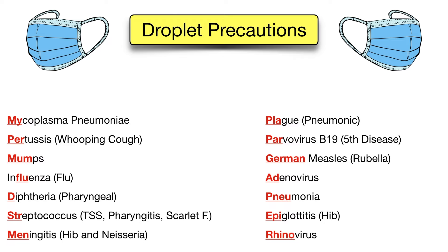Droplet precautions are also required for pertussis, also known as whooping cough, caused by Bordetella pertussis, as well as mumps, influenza or the flu, and diphtheria — this time the pharyngeal form. Remember, the cutaneous form requires contact precautions. Droplet precautions are also required for streptococcal infections including pneumonia, streptococcal toxic shock syndrome, and pharyngitis and scarlet fever in infants and young children. Next, meningitis caused by either Haemophilus influenzae type B or Neisseria also requires droplet precautions.